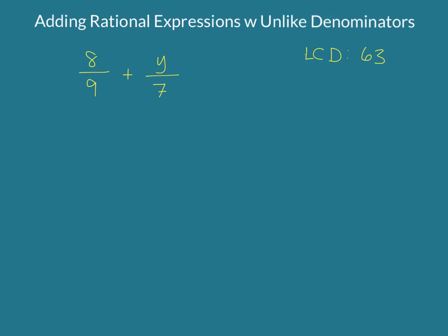In this case, it does happen to be their product. It won't always be their product. Sometimes it might be smaller. So here's what we need to do. We need to get both denominators to be 63. The way that we get 9 to become 63 is we multiply by 7. So we're going to do that to both denominator and numerator. So our first fraction will end up being 56 over 63. And then our second one, we have to multiply 7 by 9. So we'll multiply top and bottom by 9, so we'll have 9y over 63.